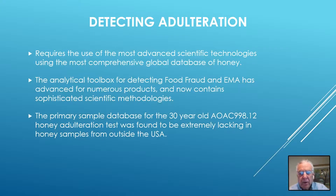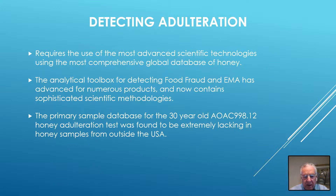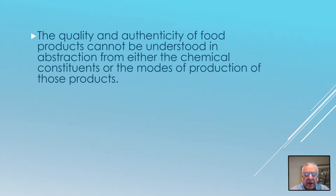The detection of all or any of the above modes of adulteration requires the use of the most advanced scientific instrumentation and a comprehensive global database regarding honey. This is especially true when a food product like honey results from many variables and manifests great chemical diversity. Fortunately, the analytic toolbox for detecting food fraud in numerous products as well as honey contains very sophisticated scientific methodologies. The quality and authenticity of food products cannot be separated from either the chemical constituents or the modes of production of those products.